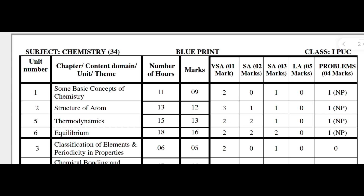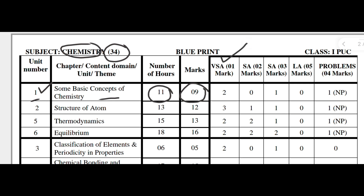The class is First PUC, subject is Chemistry, subject code is 34. The first chapter is 'Some Basic Concepts of Chemistry,' which has eleven teaching hours and nine marks allotted for the annual exam. This nine-mark allocation is divided into several sections — VSA means very short answers, and SA means short answers for two-mark type questions.